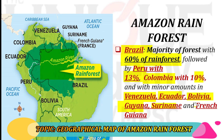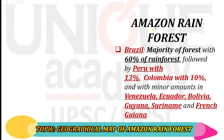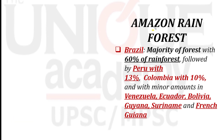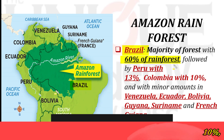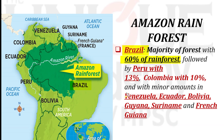Next important topic: the Amazon rainforest. There was a massive fire in the Amazon rainforest which made big headlines. From an exam perspective, UPSC or MPSC may ask you about the geographical map of the Amazon rainforest and which countries it covers. The largest share of Amazon rainforest is in Brazil at 60%. Second is Peru at 13%, and third is Colombia at 10%.